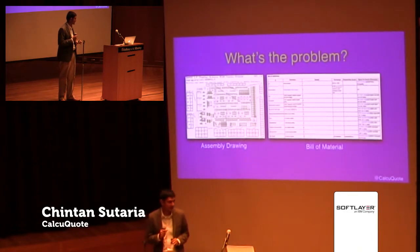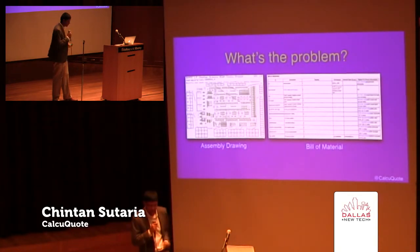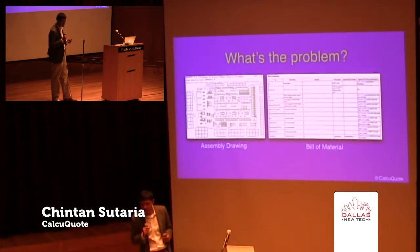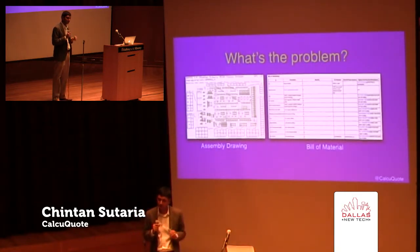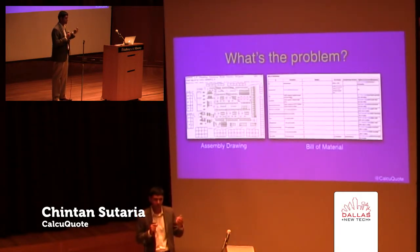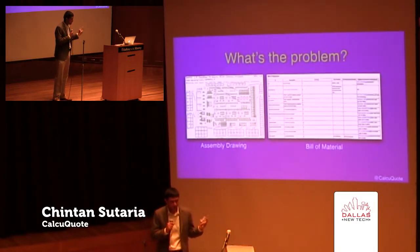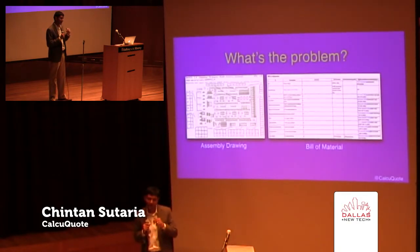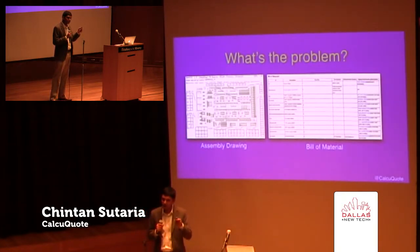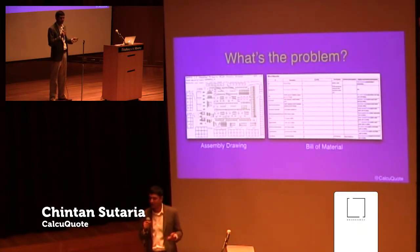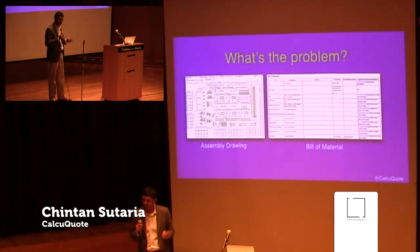Put yourself in the shoes of an electronics contract manufacturer. You get two documents: an assembly drawing, which shows you where the components on a circuit board go, and a bill of material, which shows you what those components are. Using these two documents, you're expected to provide a fixed price on how much you're going to charge your customer for building this thing. And by the way, you've never built it before. So that's the challenge that these contract manufacturers have.